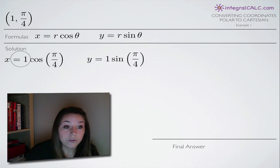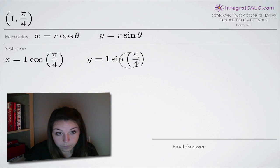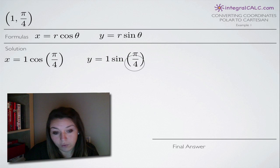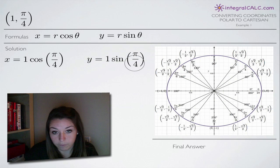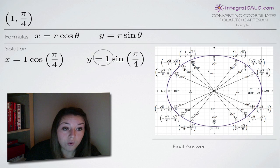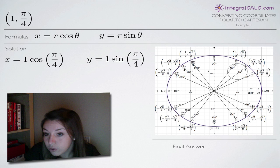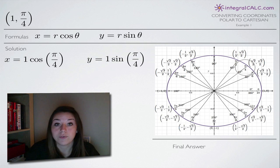The next thing we do, once we've got these written down, is identify the point pi over 4 on the unit circle, which we've got up here. So we look on the unit circle and we're looking for pi over 4 in both of our equations. We look on the unit circle and we see that it's this point here, pi over 4.